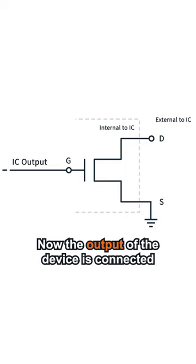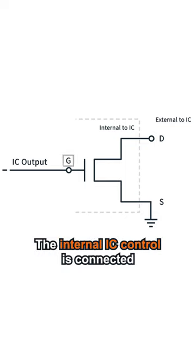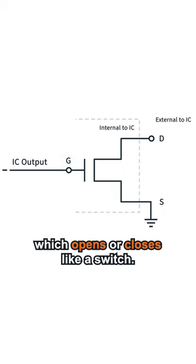Now, the output of the device is connected to the drain of an internal MOSFET. The internal IC control is connected to the gate of the MOSFET, which opens or closes like a switch.